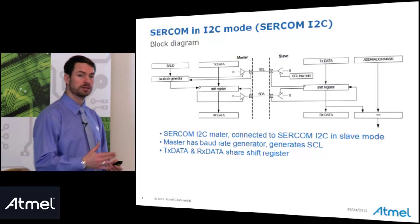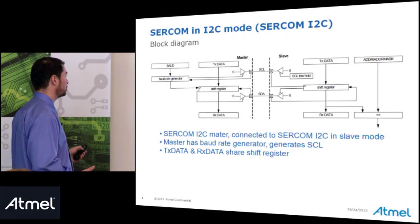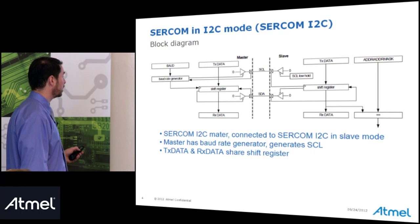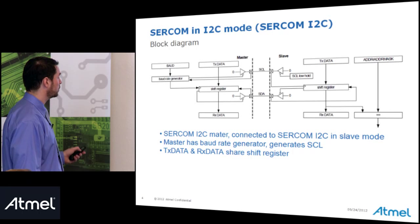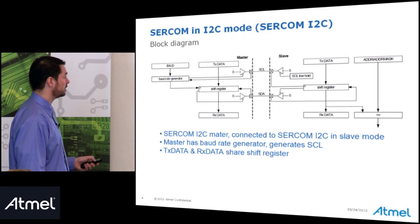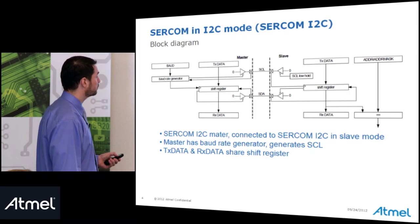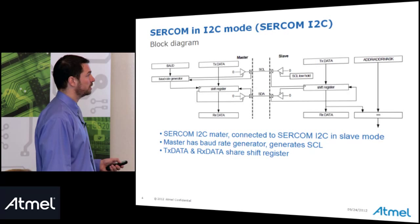The baud rate register is the register we set to define the desired I²C baud rate. The baud rate generator then attempts to match that baud rate and in turn clocks the serial clock line. The baud rate generator also clocks a shift register which is shared by both TX data and RX data. The layout is pretty similar on the slave side.